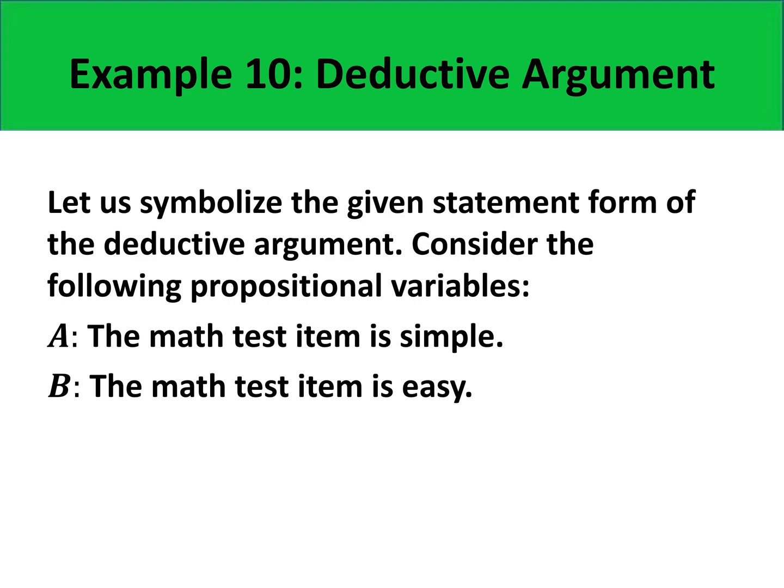In order to evaluate if a deductive argument is valid or not, we need to symbolize the statement form. So let us symbolize the statement form, considering the propositional variable A, which represents the proposition 'the math test item is simple,' and variable B, for the proposition 'the math test item is easy.'